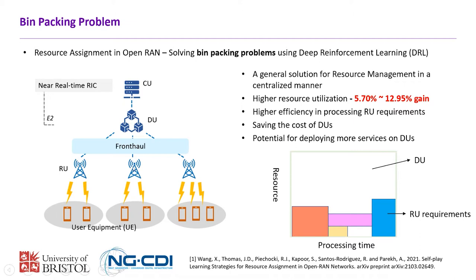Here on the left we can see a diagram of the Open RAN structure. We have a CU, centralized unit, and we have distributed units. For each distributed unit, it will have connections to multiple remote units, so this will be centralized processing at the DU. We provide a general solution for resource management in this centralized manner.